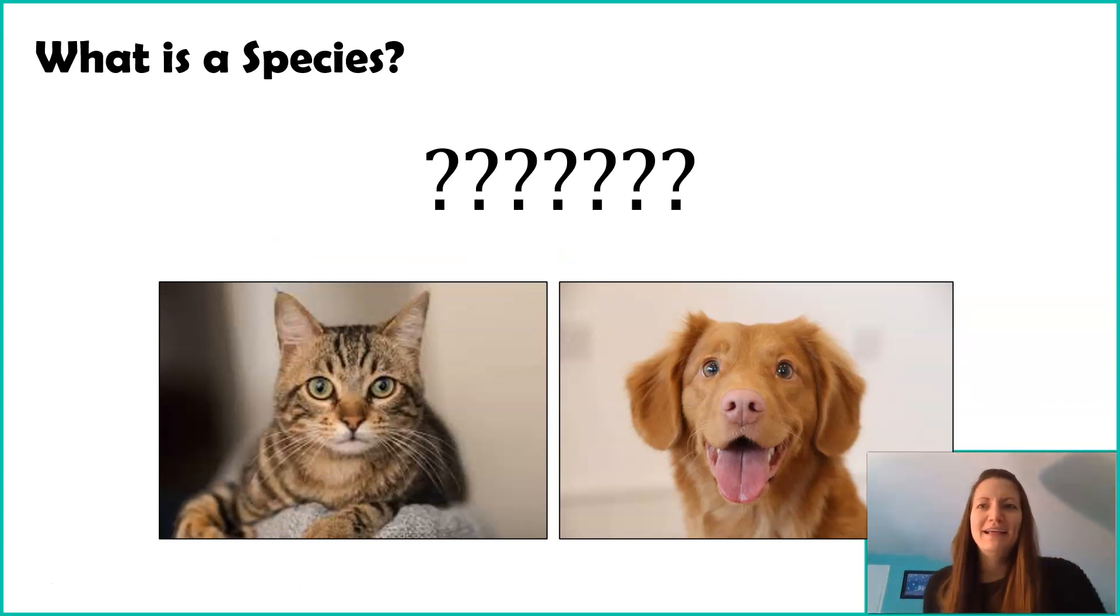Now, before we dive into how this happens, it's pretty important for us to understand what a species is. I keep saying speciation, and we make a new species. But what does that mean? If we were in a classroom, I'd have you guys think about this. Here I have a cat and I have a dog. And you probably know that these are different species. But my question to you is, why? Why are they different species? What makes them a different species? Why is a cat not a dog?